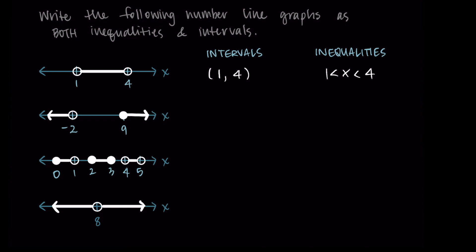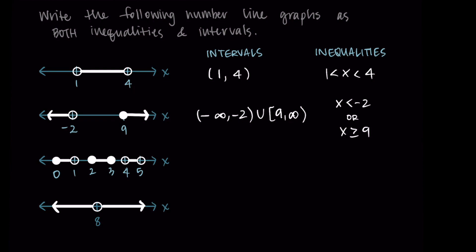The next graph has two parts. On the left, everything up to negative two — as an interval: (−∞, −2) with parentheses on both values since neither is included. Then we union this with the right-hand part: everything greater than or equal to nine, so [9, ∞) using a square bracket on nine since it has a filled-in dot, and parentheses with infinity. As an inequality: x is less than negative two or x is greater than or equal to nine.